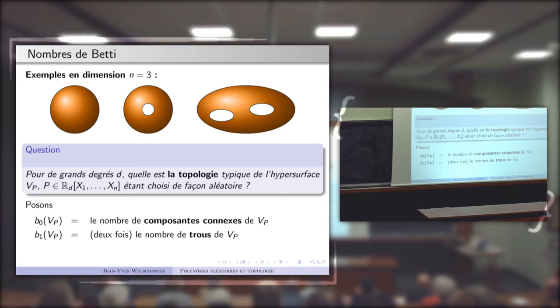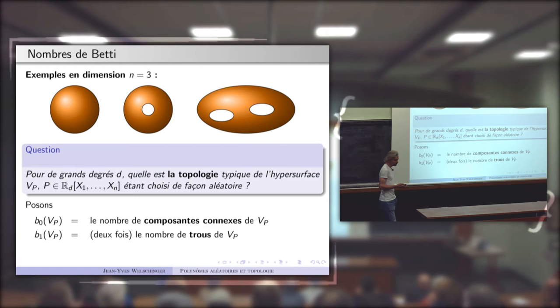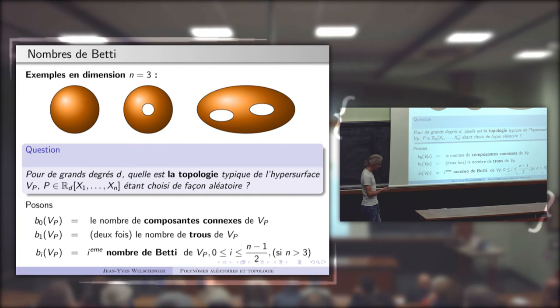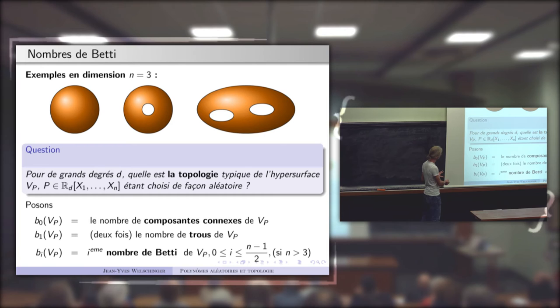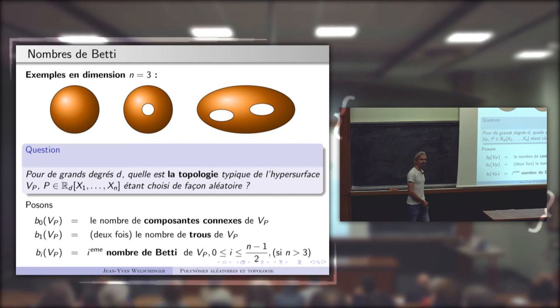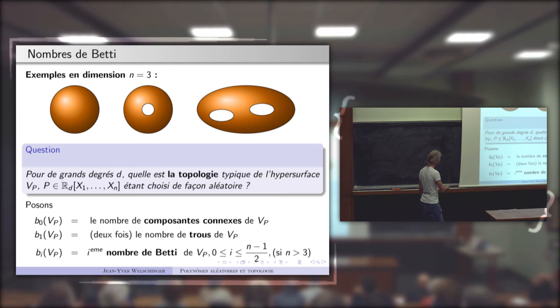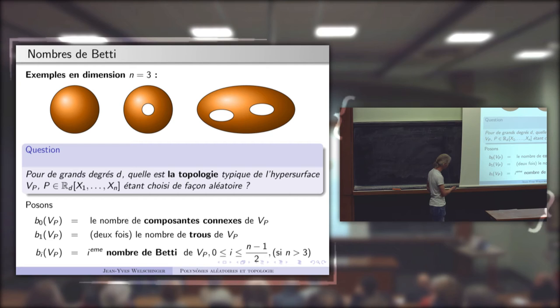C'est ma façon de mesurer la topologie d'une surface dans l'espace de dimension 3. Si on rajoute encore des variables — un polynôme à n variables — l'ensemble des racines est une hypersurface dans R^n, et cette liste B_0, B_1, B_2, B_3, … continue, un par dimension. Ce sont les nombres de Betti, qui généralisent le nombre de composantes connexes et le nombre de trous.